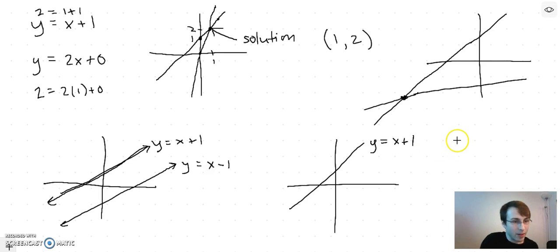Think about the line 2y equals 2x plus 2. Well, if you divide that by 2, then you get back to y equals x plus 1. So that line has the same graph, so it goes right over this line.